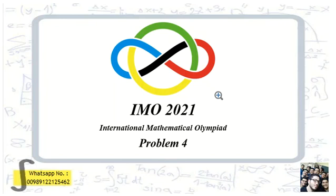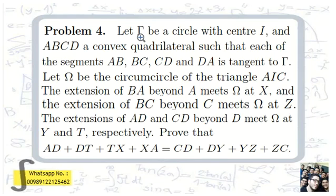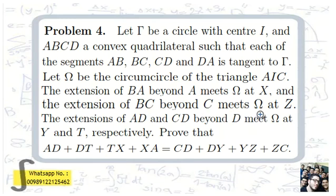IMO 2021 International Mathematical Olympiad Problem 4. Let gamma be a circle with center I, and ABCD a convex quadrilateral such that each of the segments AB, BC, CD, and DA is tangent to gamma. Let omega be the circumcircle of triangle AIC. The extension of BA beyond A meets omega at X, and the extension of BC beyond C meets omega at Z. The extensions of AD and CD beyond D meet omega at Y and T respectively.